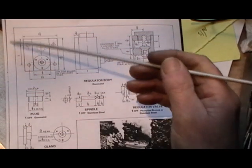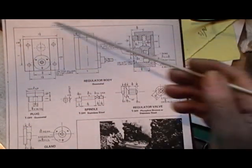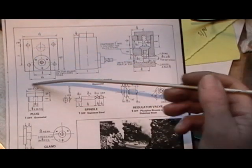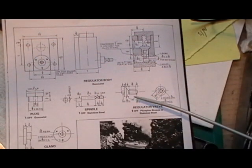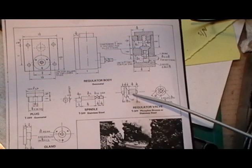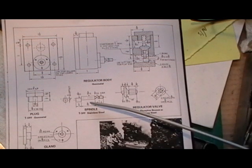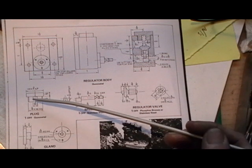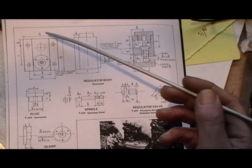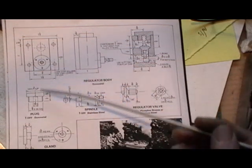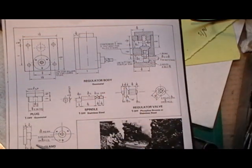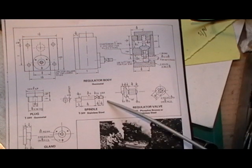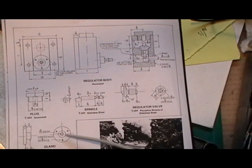So the regulator valve is this drawing in front of you and it consists of a body, a main body, and in that body there's a butterfly valve, a spindle with an offset cam on it, and then there's a plug for the top of the valve to seal it off and then a land which goes over this spindle on the outside held on with three screws.